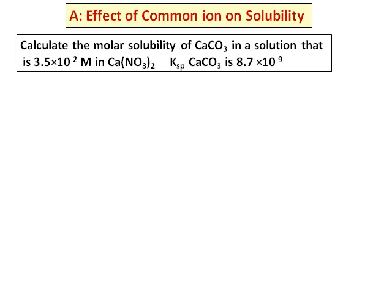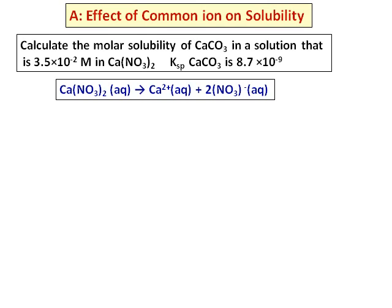I have a calcium carbonate solution in equilibrium between the solid and its ions. In the same solution, I am adding calcium nitrate. The calcium ion is common to both. We need to know how much calcium ion is in solution, so let's write the ionization of calcium nitrate. Calcium nitrate, a salt, will ionize completely, so the concentration of calcium ion from calcium nitrate equals the concentration of calcium nitrate.